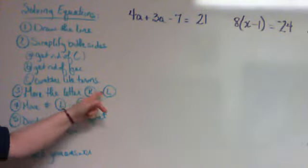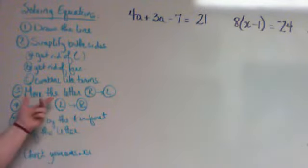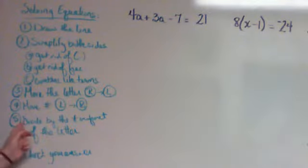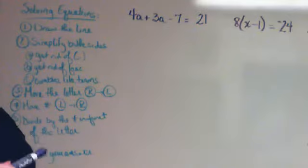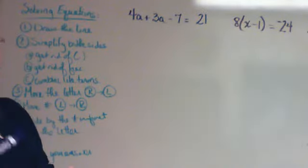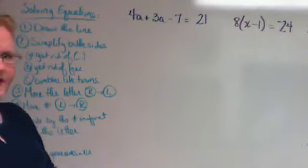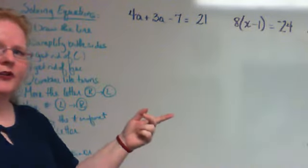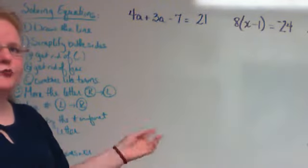Combine like terms on either side before you worry about moving stuff around. When you move the letter from the right to the left side, make sure you do addition or subtraction to move those letters. Same thing for moving the number from left to right side. Then divide by the number in front of the letter and check your answer. There are different ways to check: on a video look at the answer, on classwork go to your mom, on homework look in the back of the book, on a quiz plug that answer back into the original problem.